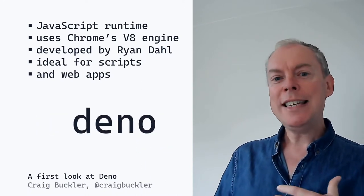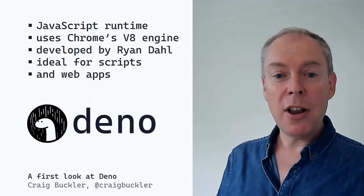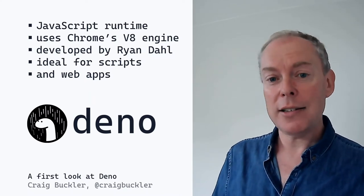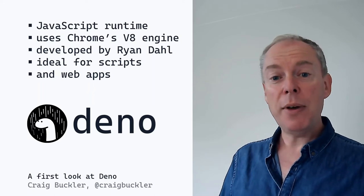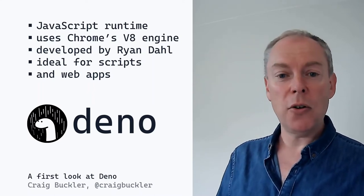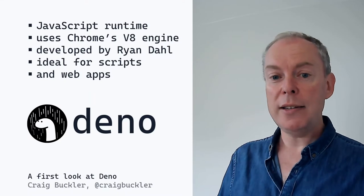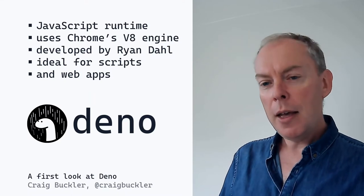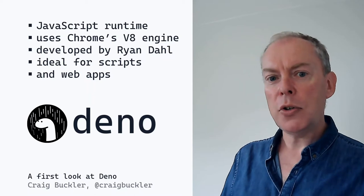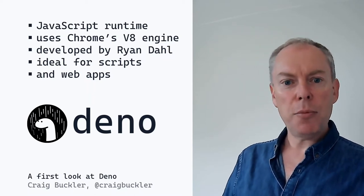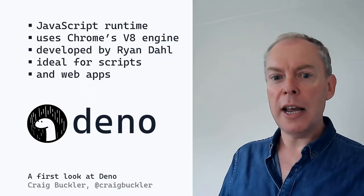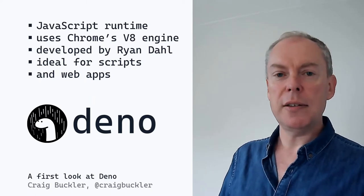But it's also Deno, which is a remix of Node created with the benefit of a decade's worth of hindsight. The first beta appeared in 2018, and version 1 was released on the 13th of May 2020. But that doesn't mean that Deno is a sequel or superior to Node — it just takes a slightly different approach. We have yet another option in our huge JavaScript ecosystem.